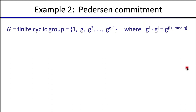The second example is a more structured commitment scheme called a Pedersen commitment, which has fantastic properties. It comes from an algebraic hash function. We use a group G, a finite cyclic group — think of it as a collection of elements where there's a generator G, and all elements are powers of this generator: G, G², G³, up to G^(Q-1). We have the usual rules of exponentiation: G^i · G^j = G^(i+j) mod Q. Q is the order of the group, assumed prime.